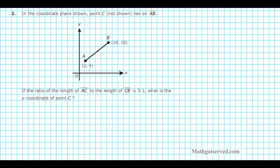Let's take a look at problem number two. It states, in the coordinate plane shown, point C, not shown, lies on segment AB. If the ratio of the length of segment AC to the length of segment CB is 3 to 1, what is the y coordinate of point C?